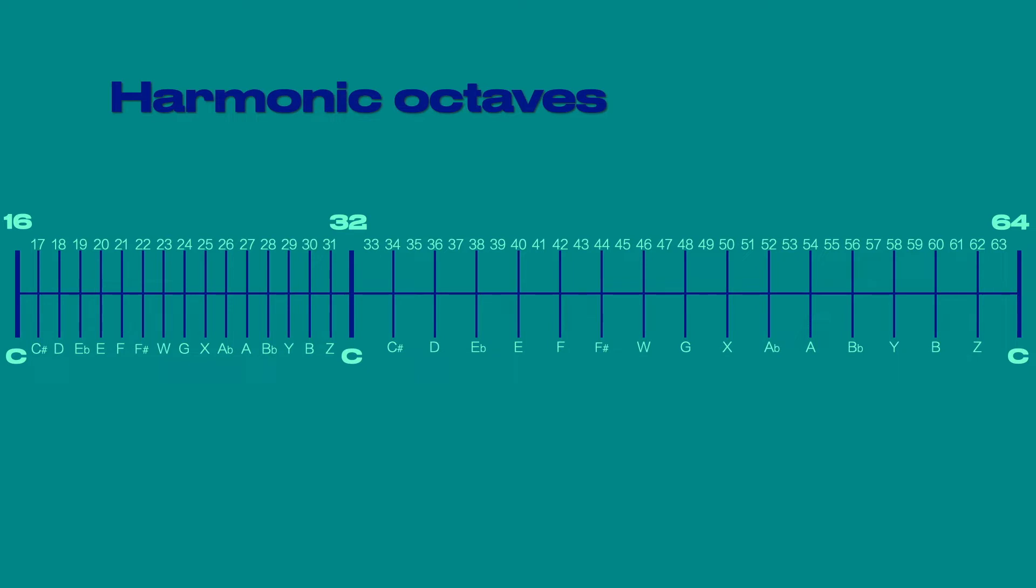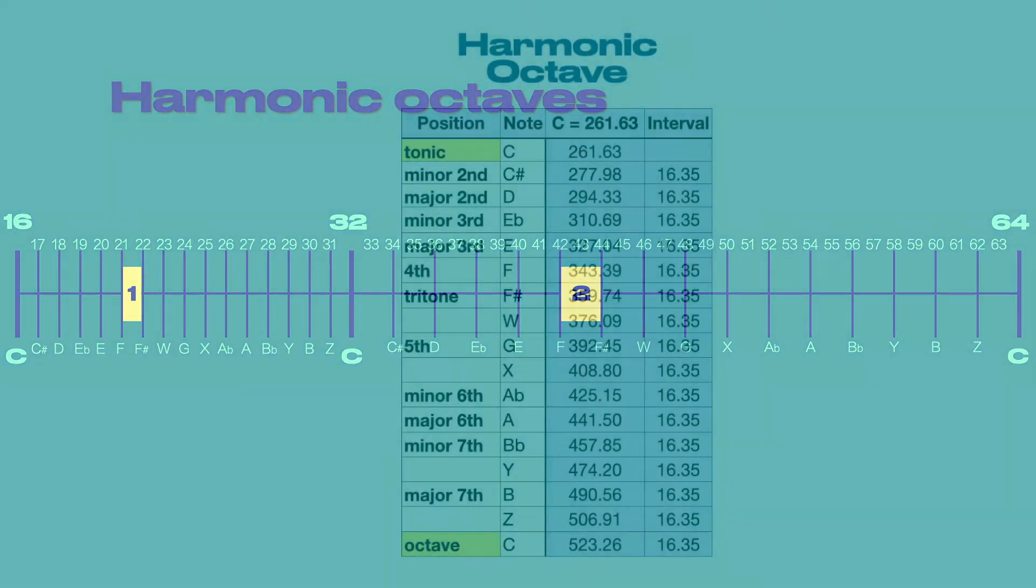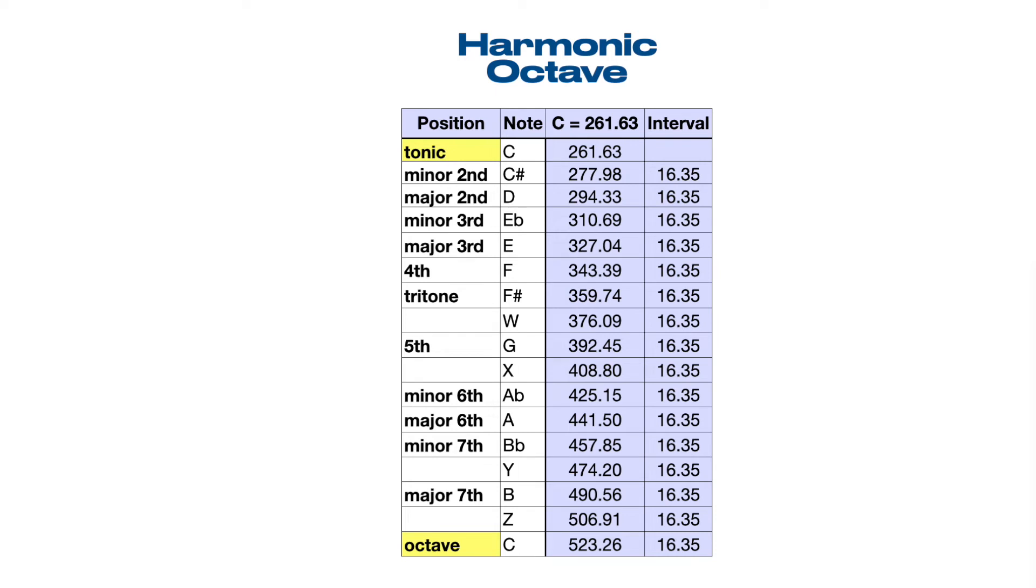Here, the octave between harmonics 16 and 32 has a rule: every note is one hertz apart. That rule doesn't change until you enter the next octave up, between harmonics 32 and 64. In this octave, the new rule is that every note is 2 hertz apart. Even using a tempered frequency, like middle C at 261.63 hertz, we see that a consistent harmonic rule is established. In this case, every note in this octave is 16.35 hertz apart.